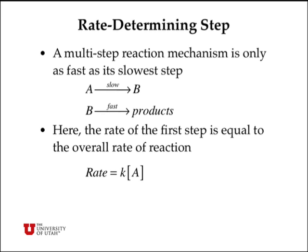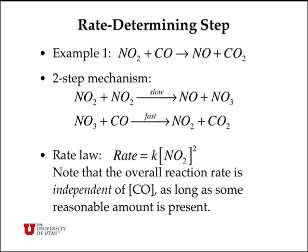The first and easiest situation to deal with is one where you have a multi-step reaction, and the first step is slow compared with all of the other steps that come after it. Here it's a rate-determining step, and the rate of the overall reaction is given by the molecularity of the slow step. So in this simple example the rate would be first order in reactant A.